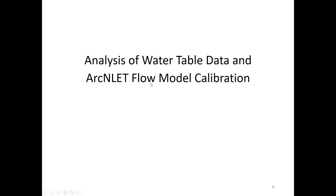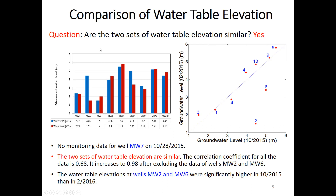We first analyzed water table data, then conducted ARCULATE flow model calibration. The first question is whether the two datasets of water table data are similar — and the answer is yes. These are water level data for nine monitoring wells; one well lacks data for October 2015. Blue represents 2015 data and red represents 2016 data, and they are really similar to each other.